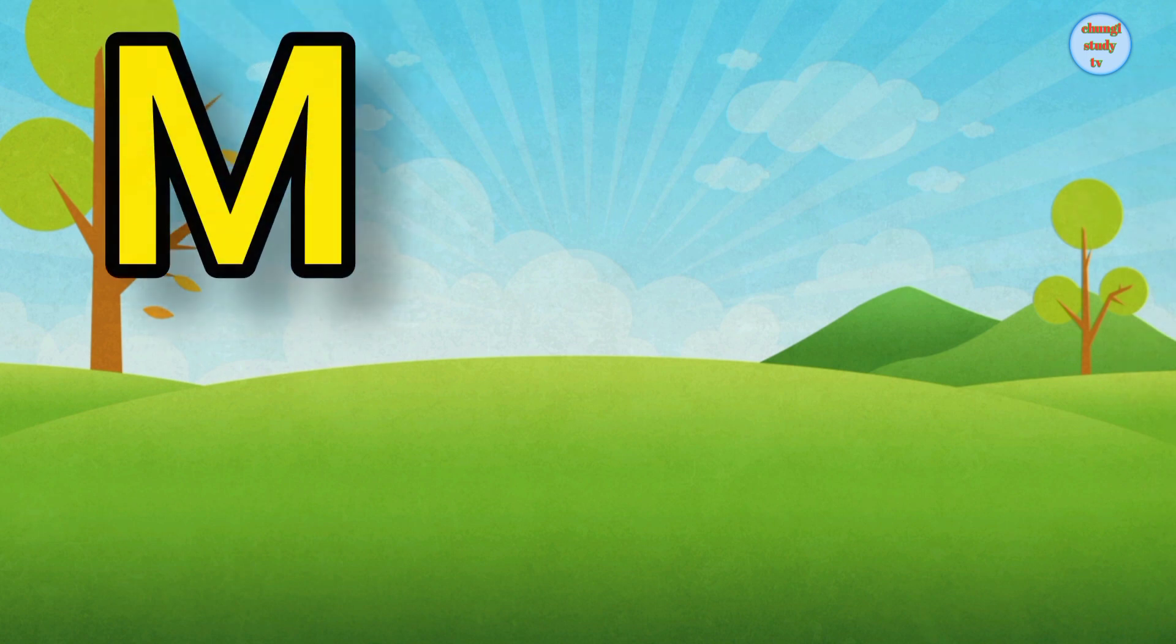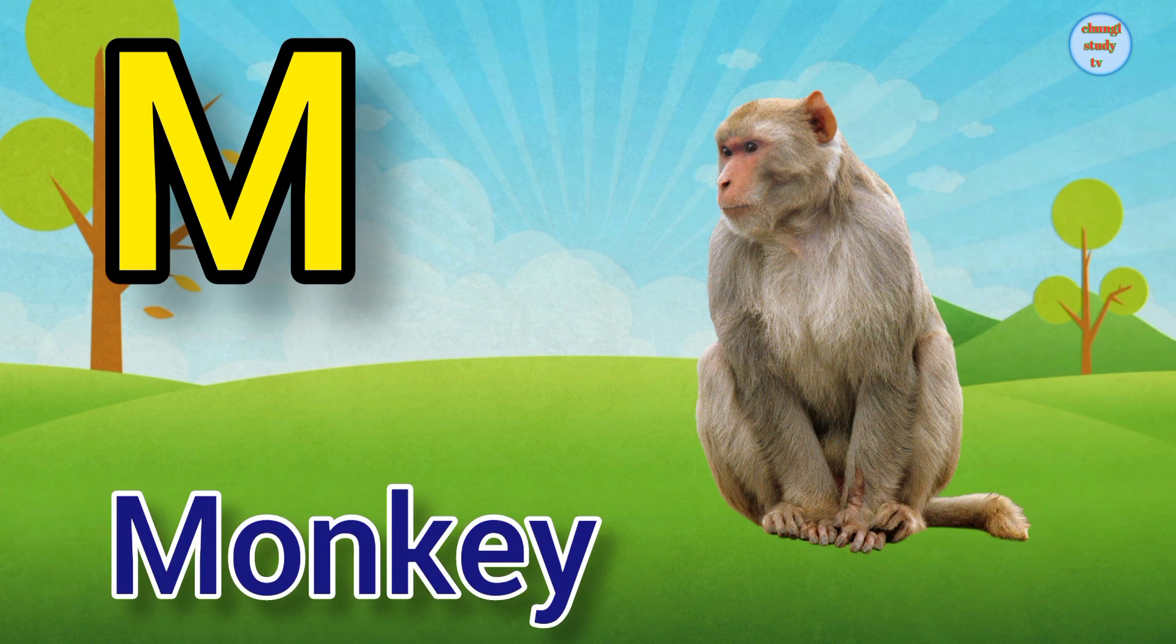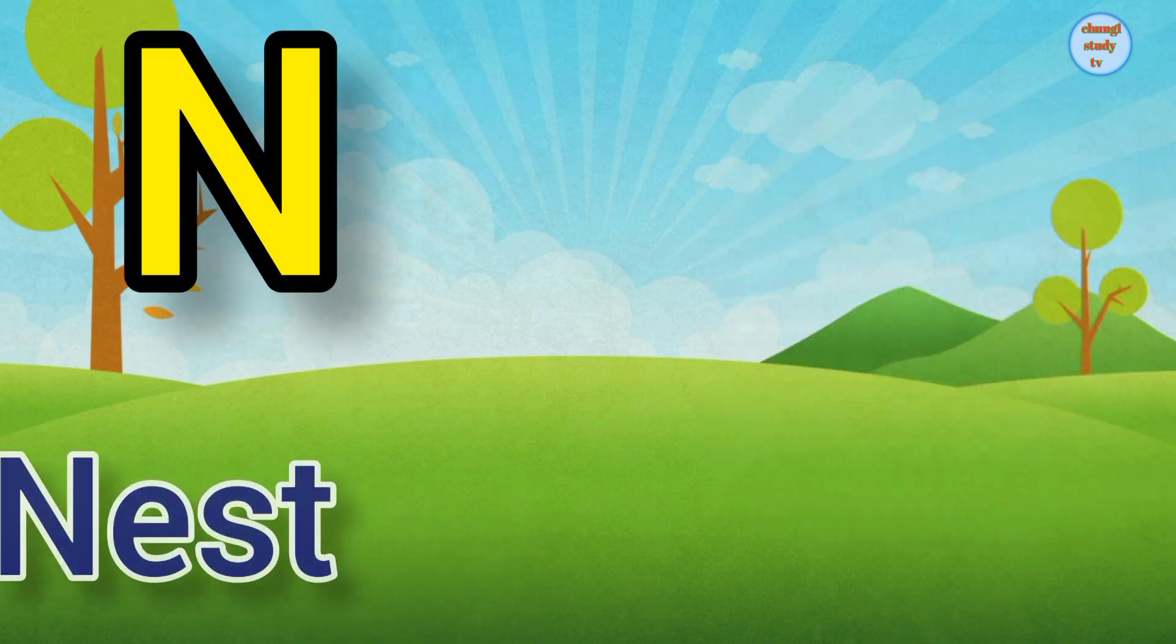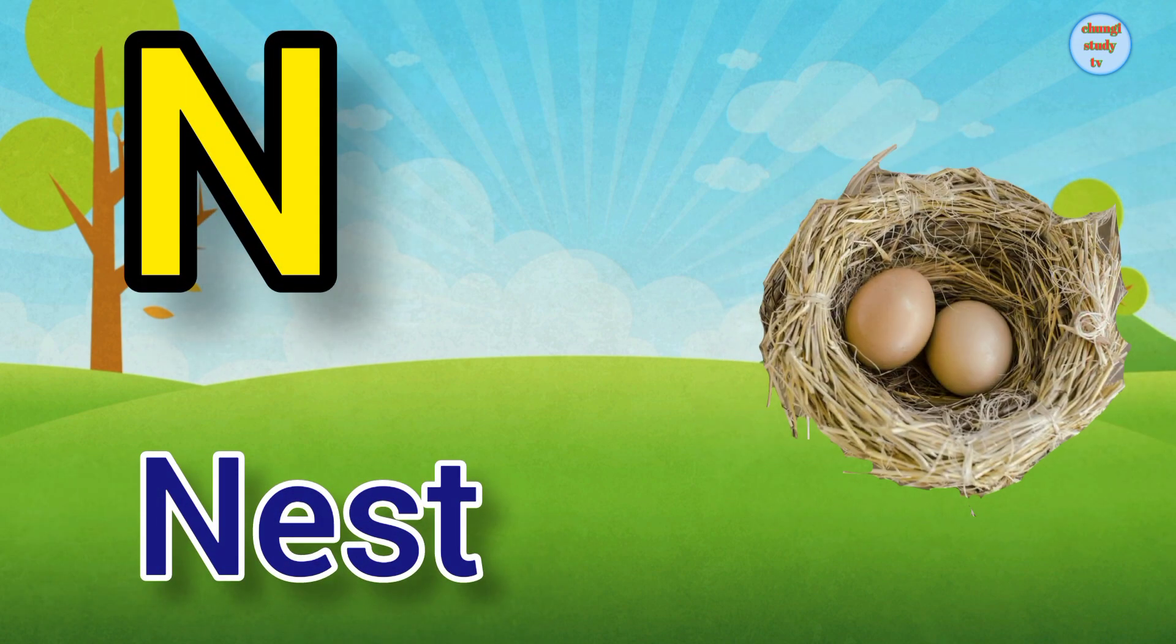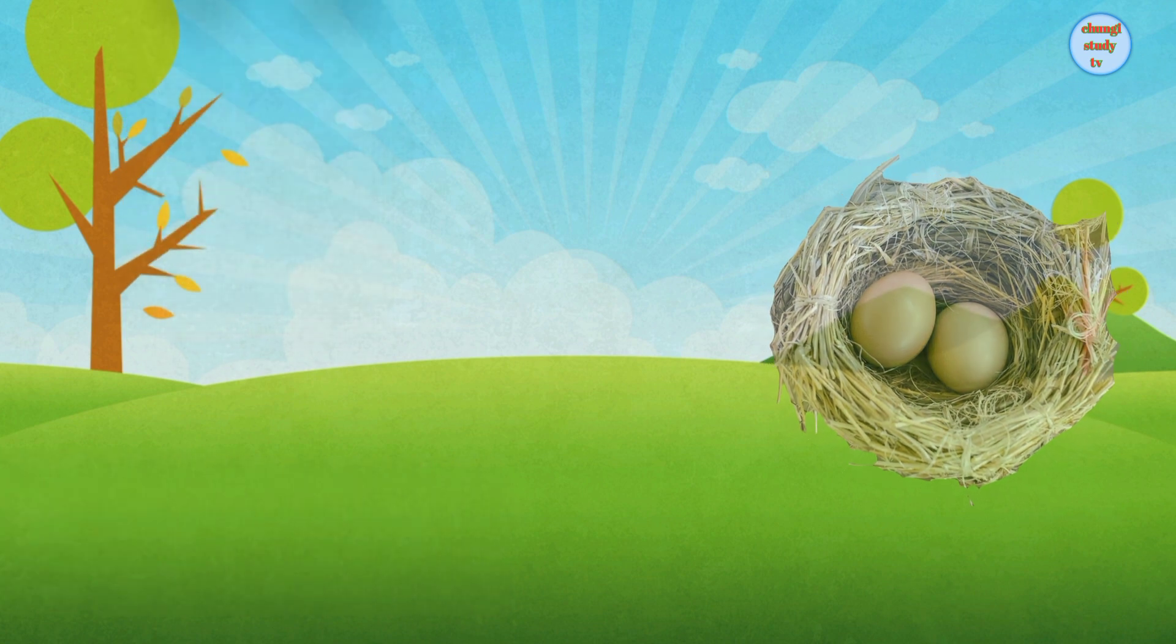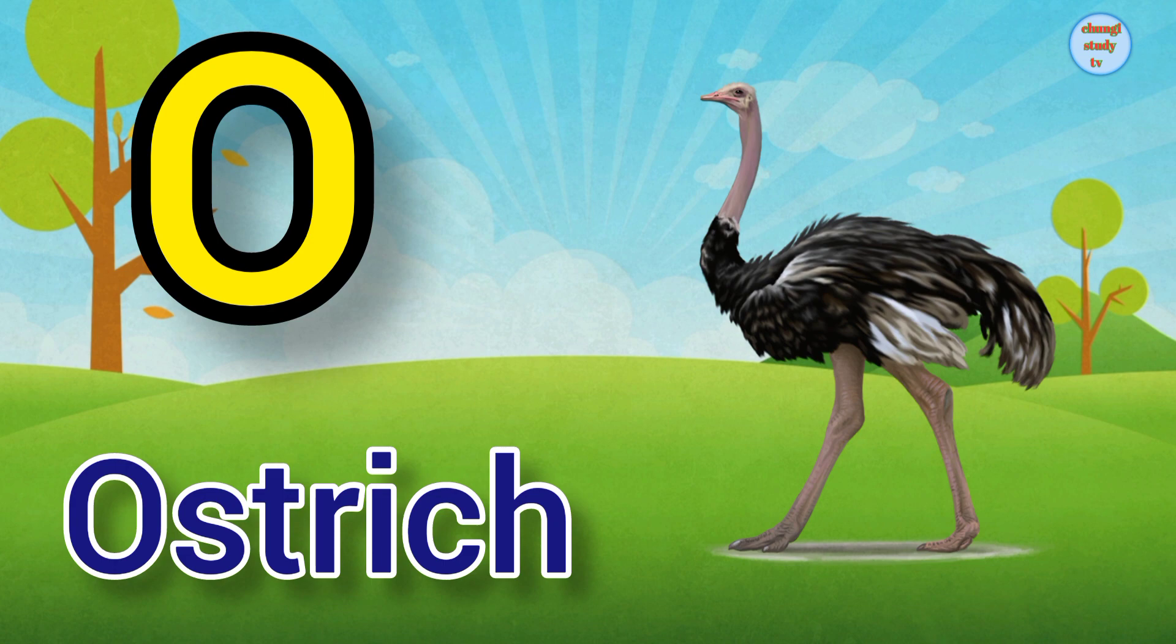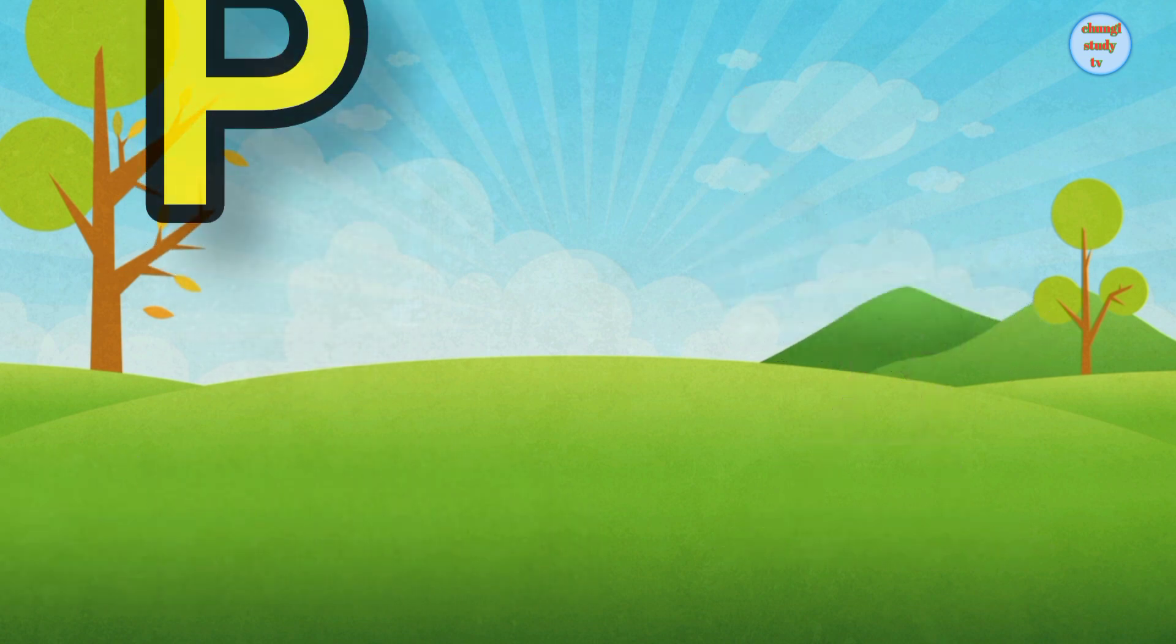M. M for Monkey, Monkey means bandal. N. N for Nest, Nest means ghosla. O. O for Ostrich, Ostrich means sutur murg.